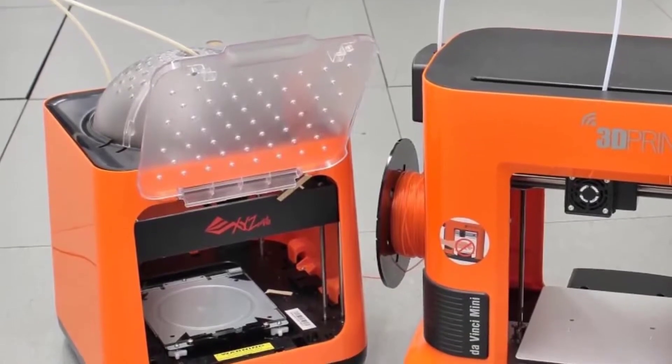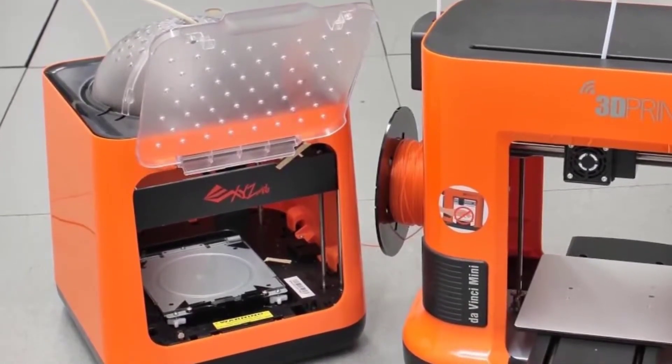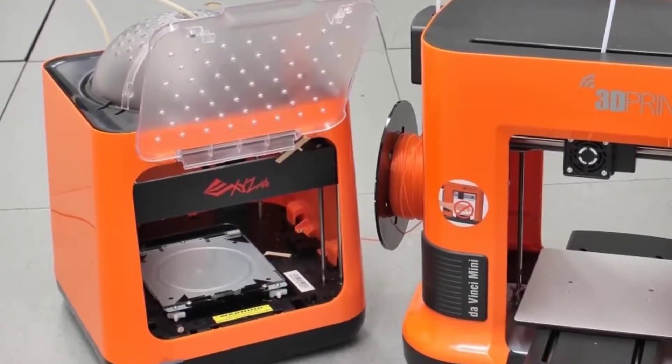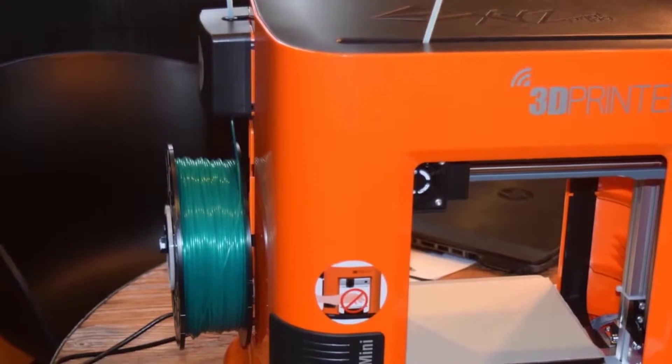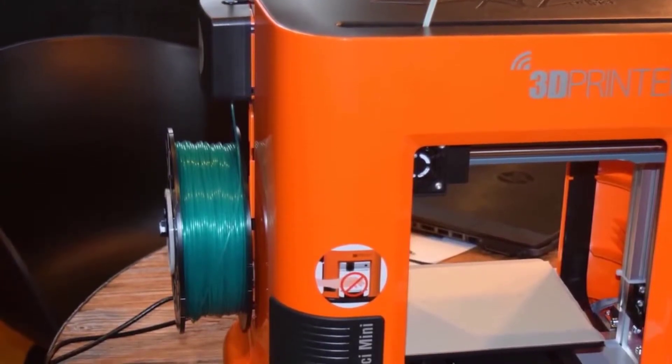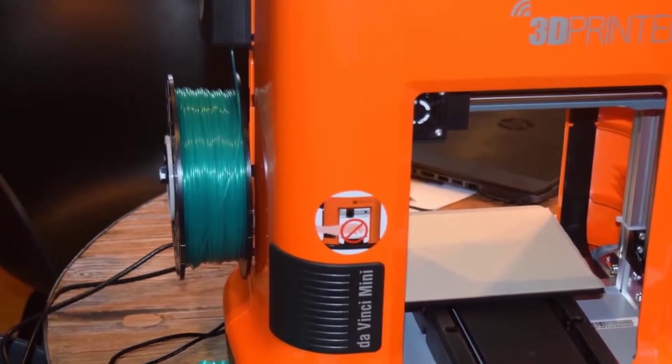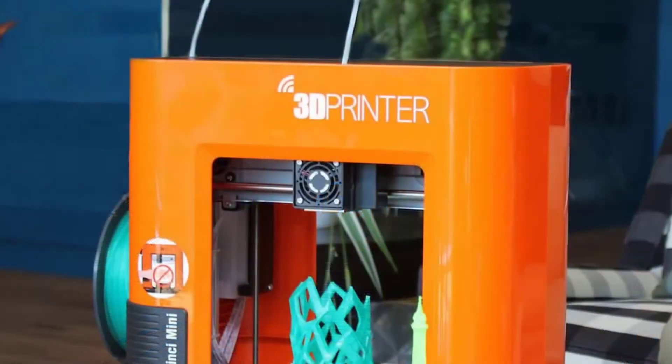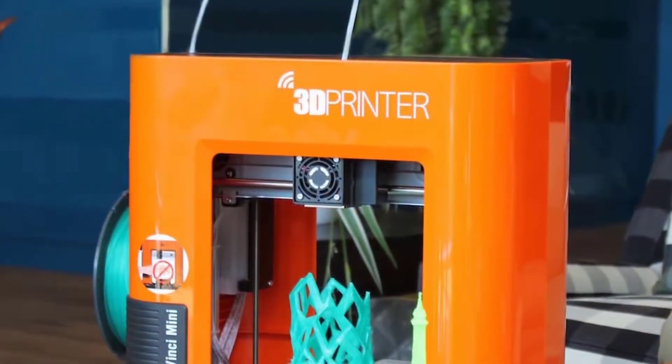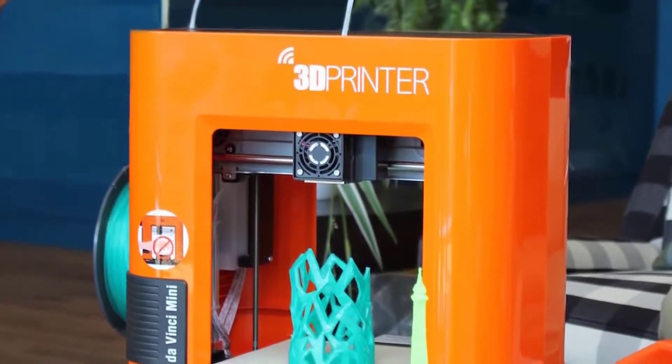At the bottom of the open space in the middle of the Mini is the print bed, a 6 by 6 inch aluminum slab covered with a sheet of tape that the PLA print material sticks to. This sheet can be easily swapped out if it's damaged while removing a print, and the Mini ships with three of these. This print bed allows the DaVinci Mini to build prints up to 5.9 by 5.9 by 5.9 inches, or a little more than 205 cubic inches.